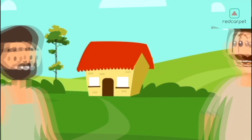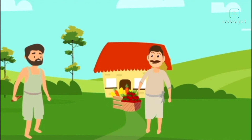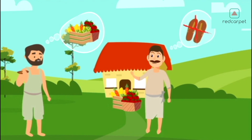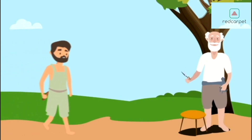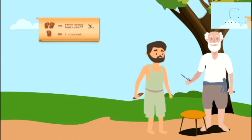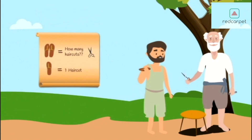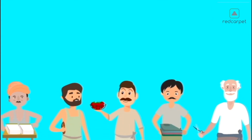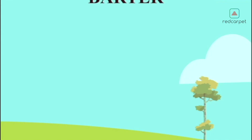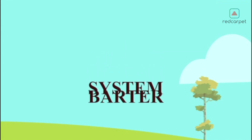But does the barter system always work? Now Manoj needs more vegetables and goes to Kisna, but Kisna doesn't need more footwear — so no barter takes place. Manoj also needs a haircut and goes to Shambu the barber, but the value of a haircut is much less than a pair of slippers, and the slipper cannot be divided — so no barter takes place again. Exchange of goods was not easy, and that is why the barter system gradually ended.